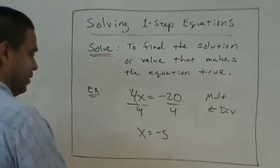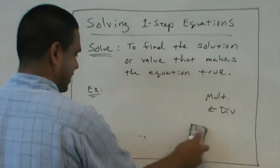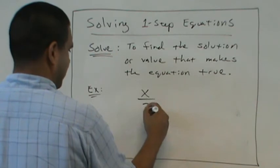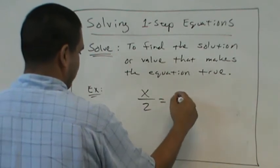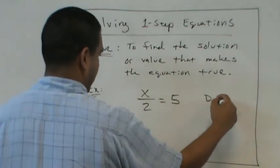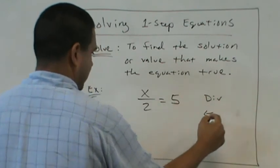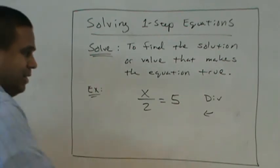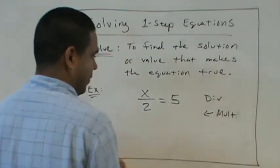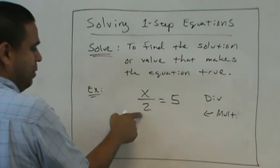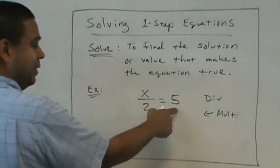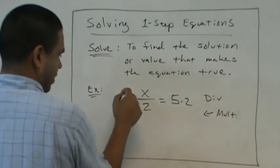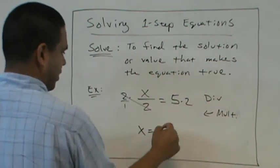So then that takes us to the next one, the last one. What if it's a division problem? What's the inverse of division? Multiplication. Very good. Okay. We're going to multiply. So a number divided by 2 is 5. What number was it? 10. That's it.